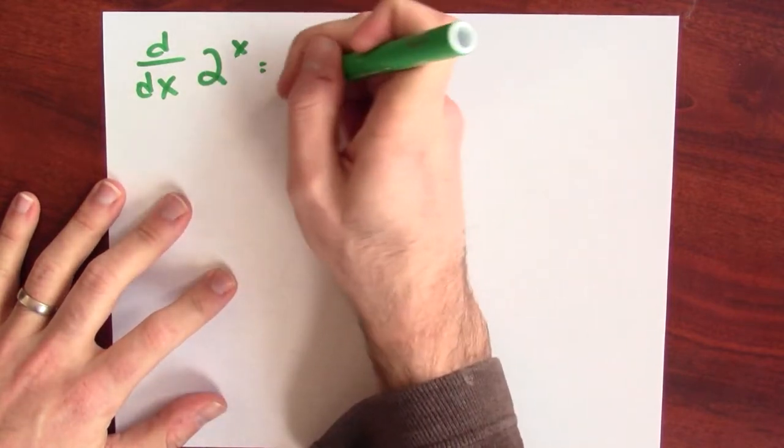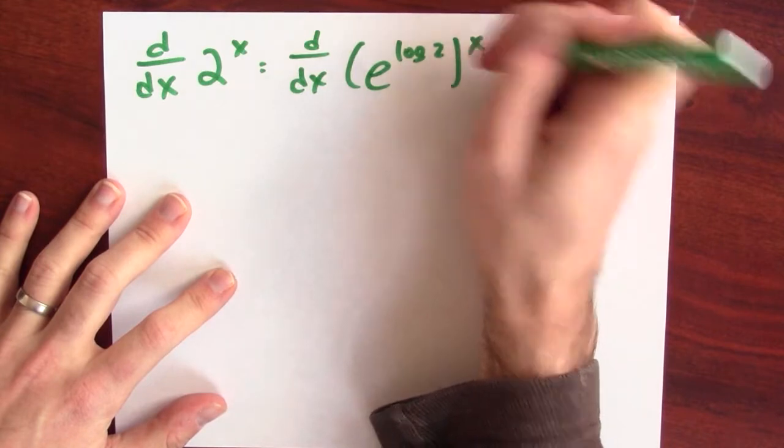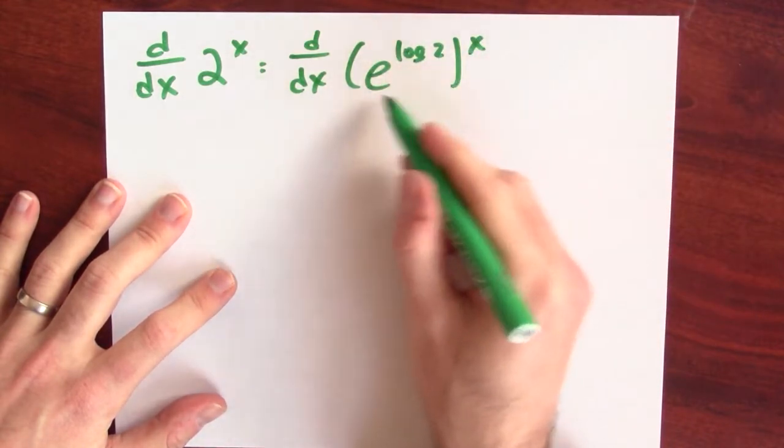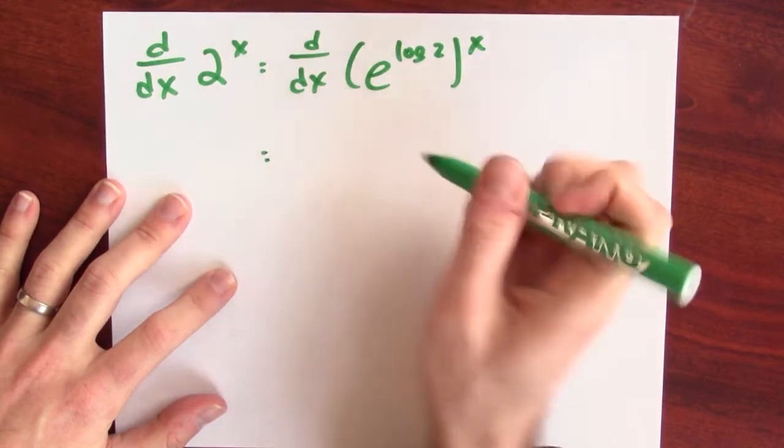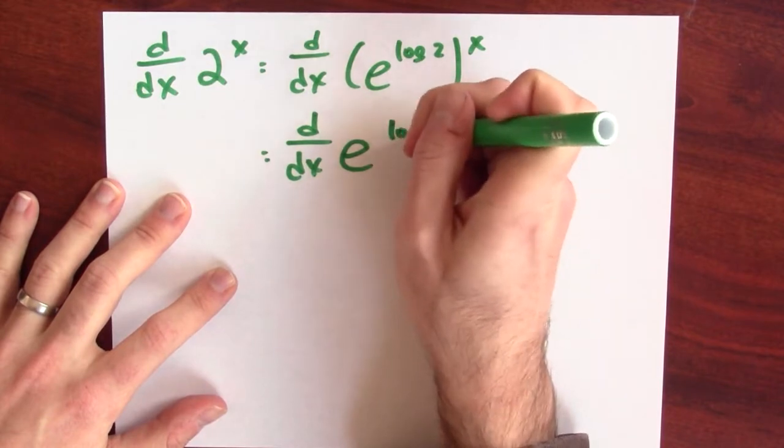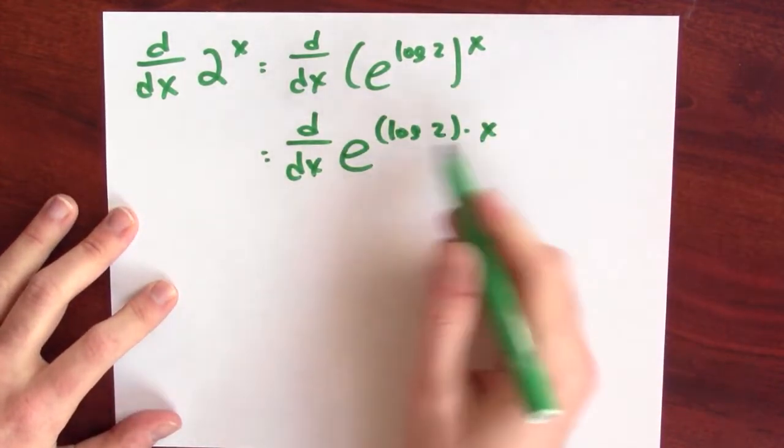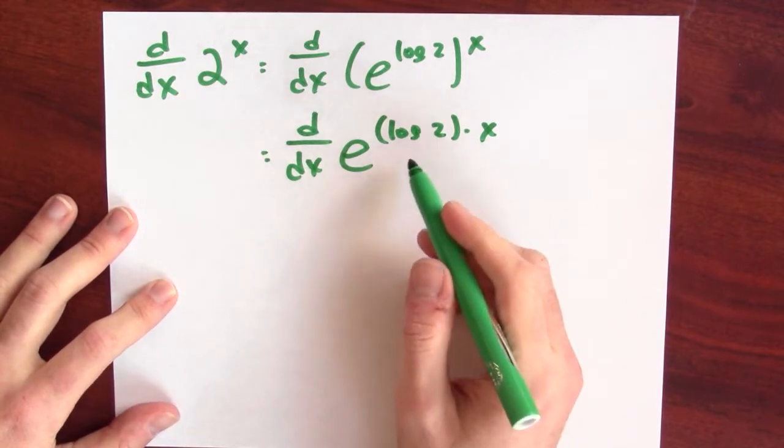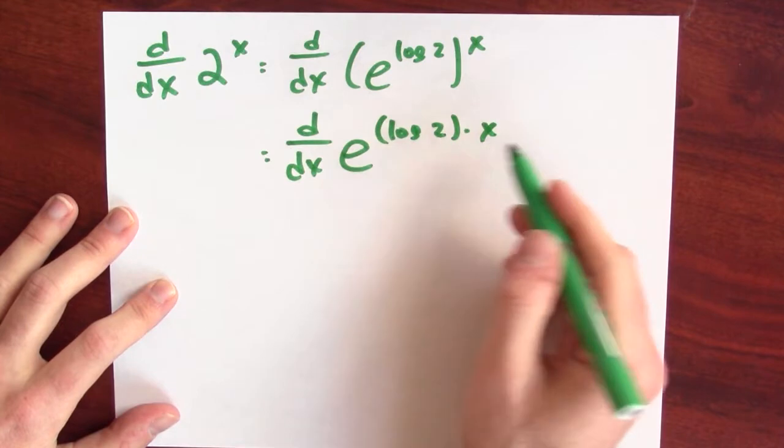So in this case, let's replace 2 by e to the log 2 to the x. Instead of writing 2 here, I've just written e to the log 2. This is just 2. But now I've got e to the log 2 to the x, and that's the same as e to the log 2 times x. And now, this is a composition of functions that I know how to differentiate. I know how to differentiate e to the, and I know how to differentiate a constant multiple times x.